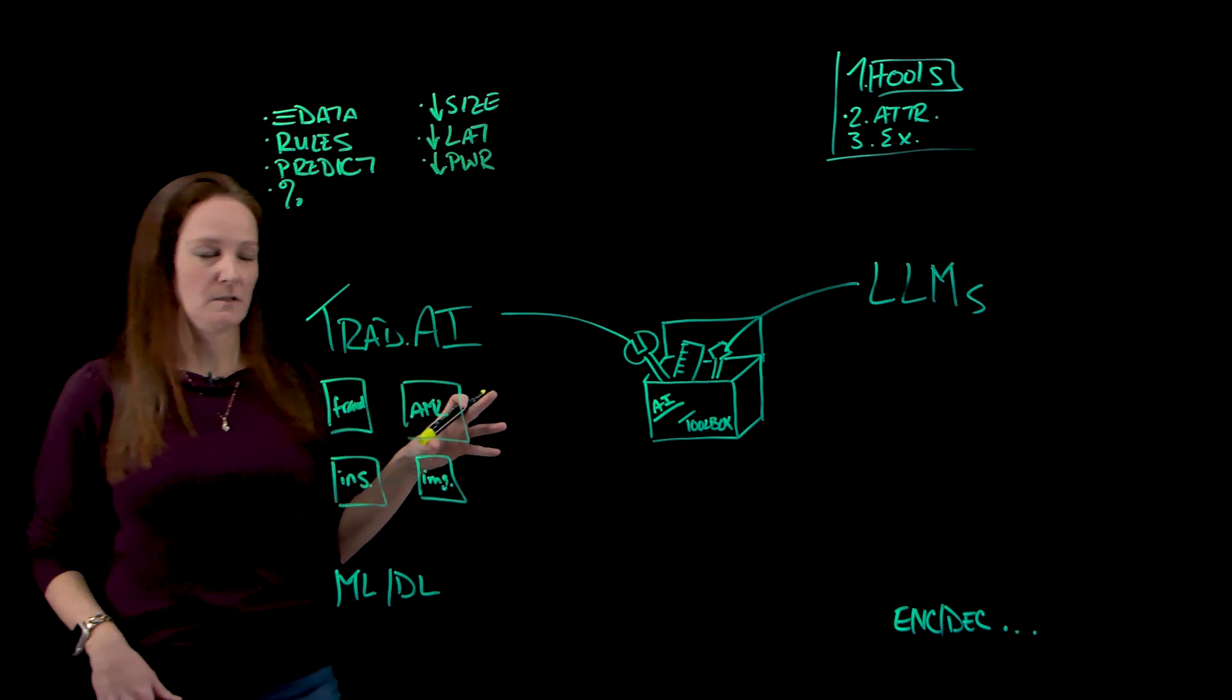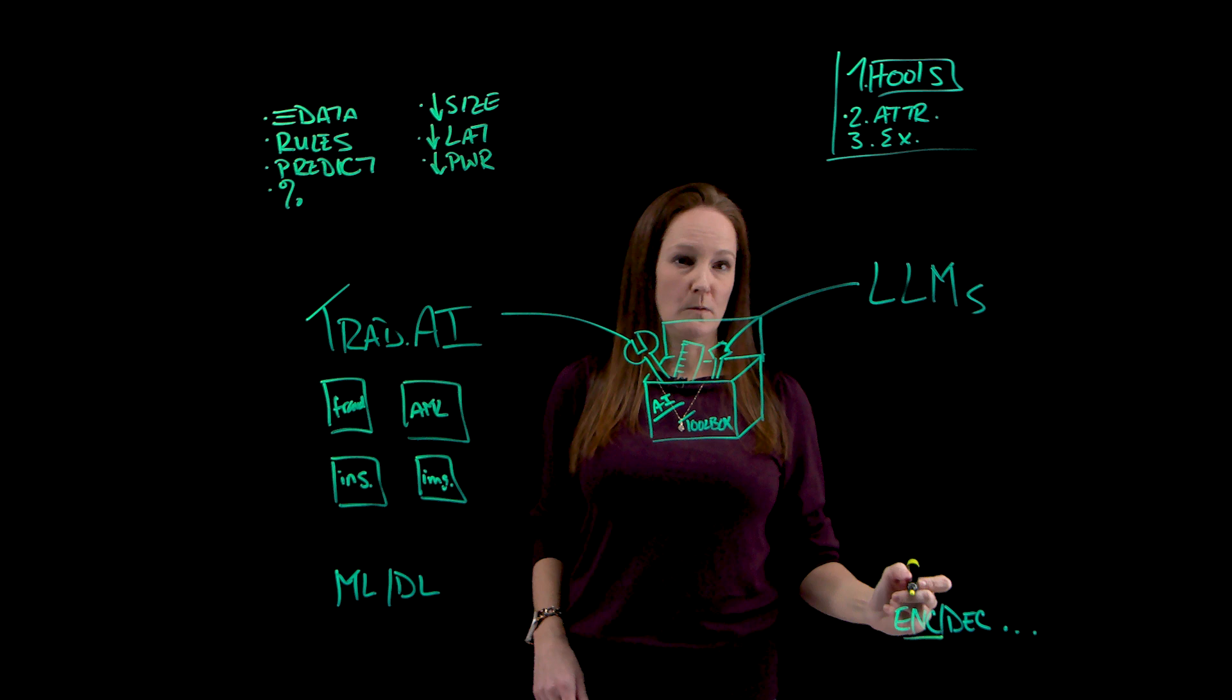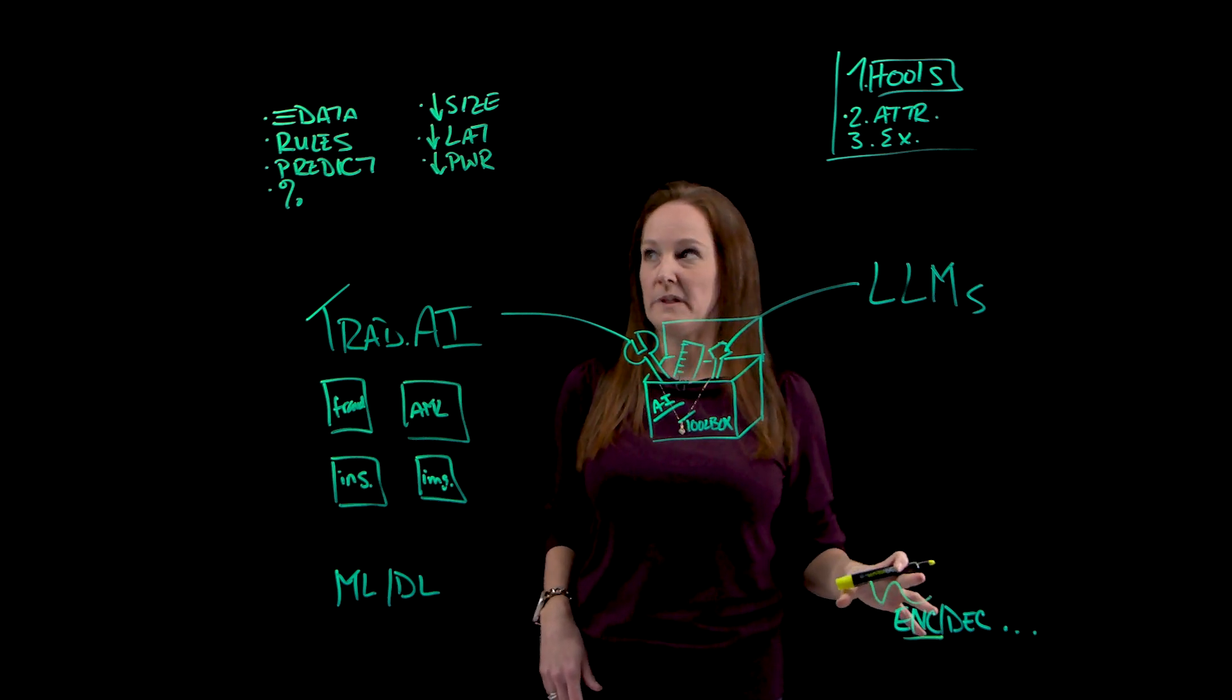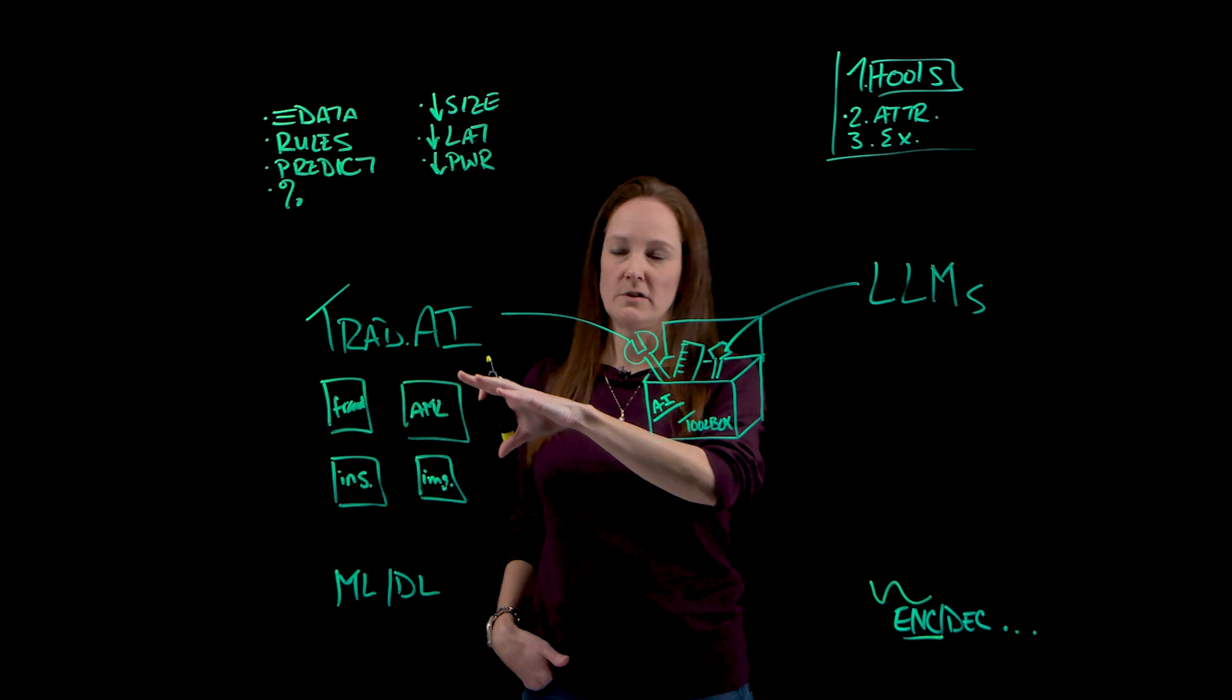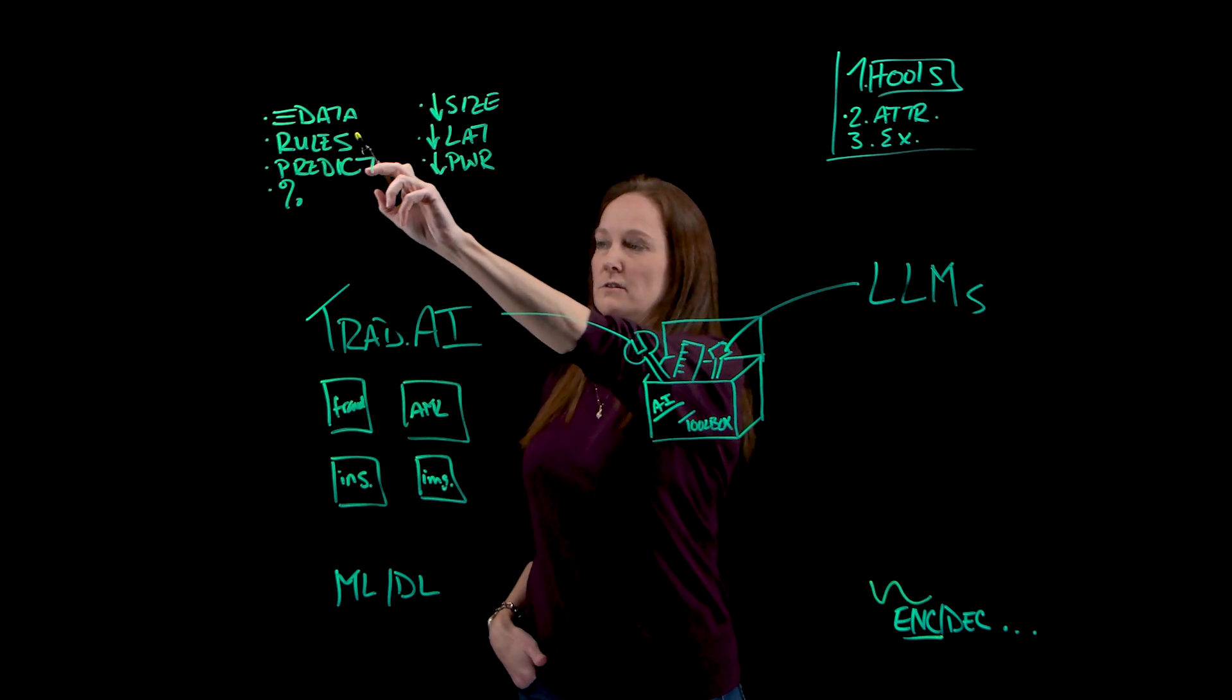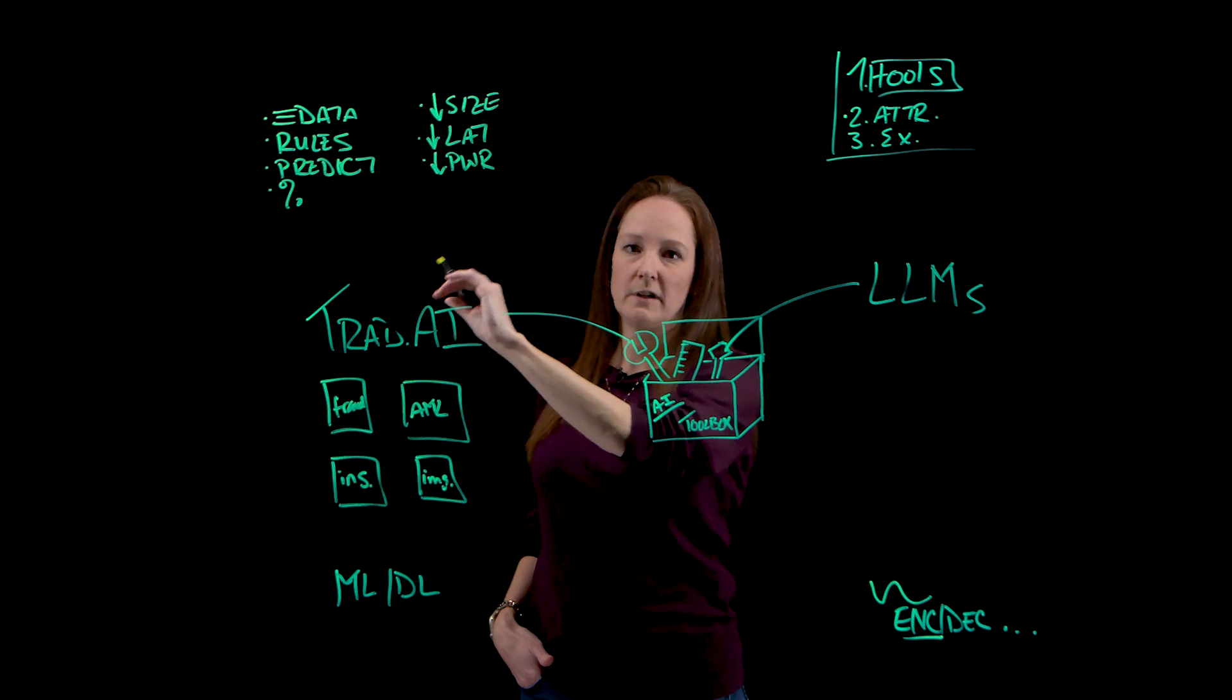Let's jump over to our large language models. Starting with the encoder models, let's talk through two spaces here. The first space, they work similar to traditional AI. They start with structured data, they follow a set of rules, they make a prediction, and they give a confidence rating.